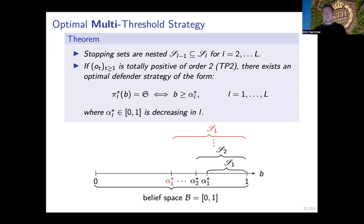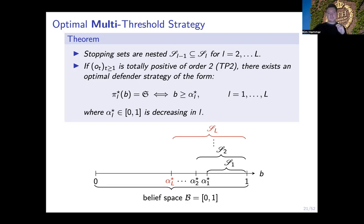It turns out we can generalize the theory and prove that in this case the solution is a multi-threshold strategy, where we have L thresholds instead of one. These thresholds are decreasing in L, where L indicates the number of response actions remaining — the more responses you have left, the lower the threshold. As you take responses, the threshold increases, and in the extreme case where you only have a single response action left (blocking the gateway), you will have the largest threshold.